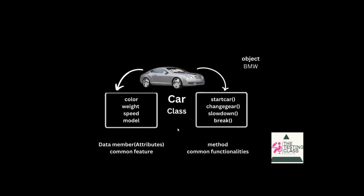Next is class. So as you can see, this skeleton of a class is car, which has some attributes or data members: color, weight, speed, and model. On the right-hand side you can see some methods and common functionalities of this car class — start car, change gear, slow down, and brake.